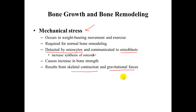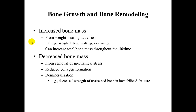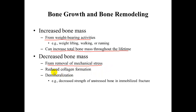For example, a person who hikes often generally has thicker bones than someone who does not, simply because of the extra stress the bones must withstand. To get increased bone mass, you need weight-bearing activities like weightlifting, walking, running, and hiking — you can increase your total bone mass throughout a lifetime. Decreased bone mass results from removal of mechanical stress: use it or lose it. During decreased bone mass, you get reduced collagen formation — keep in mind that collagen is a type of fiber found in bone.